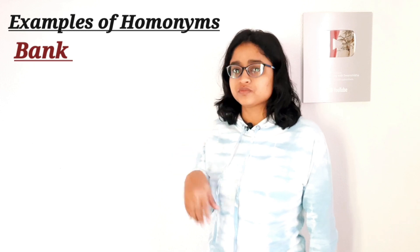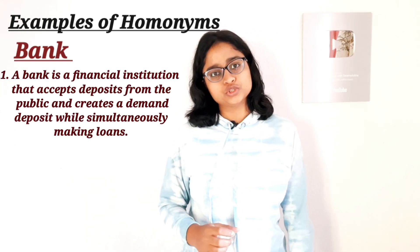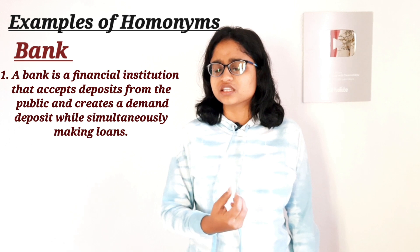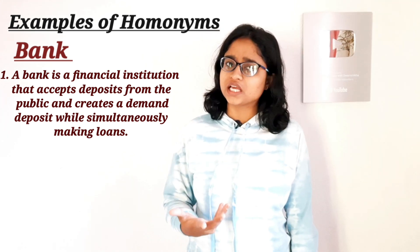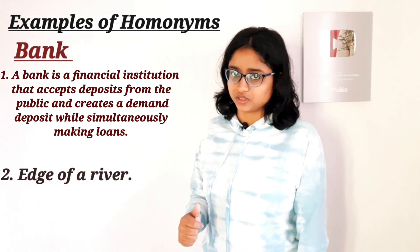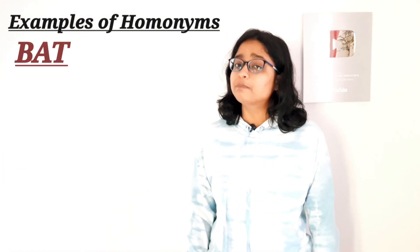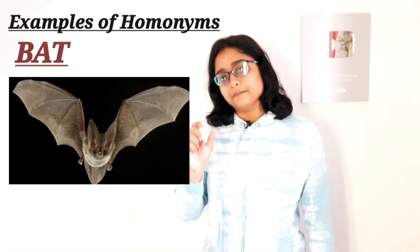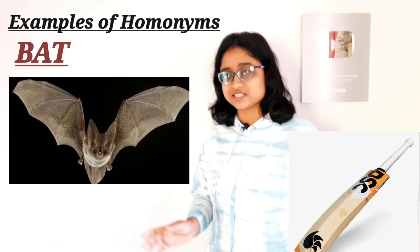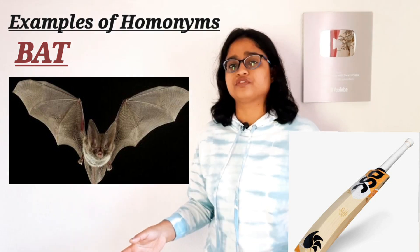For example, 'bank.' Bank is a financial institution where we deposit money, withdraw, and take loans. And 'bank' is also the sloping side of a river. Another example is 'bat' — bat is the name of an animal, and also a cricketing bat used to play cricket. The meaning is quite different, but the spelling and pronunciation are the same.